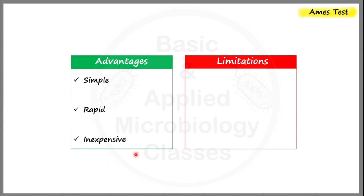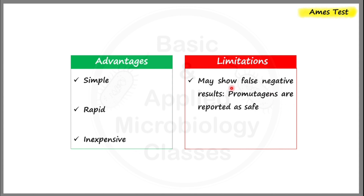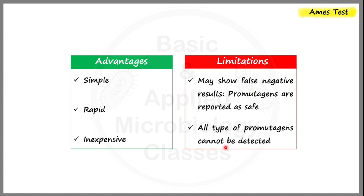Regarding limitations: the Ames test may show false negative results — pro-mutagens are sometimes reported as safe. Additionally, not all types of pro-mutagens can be detected using the Ames test.